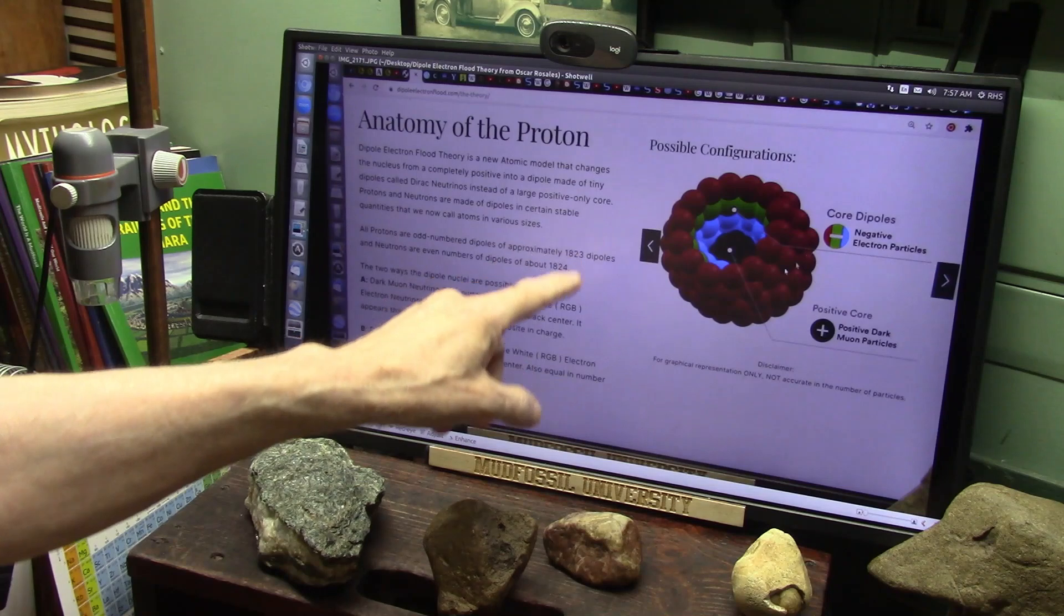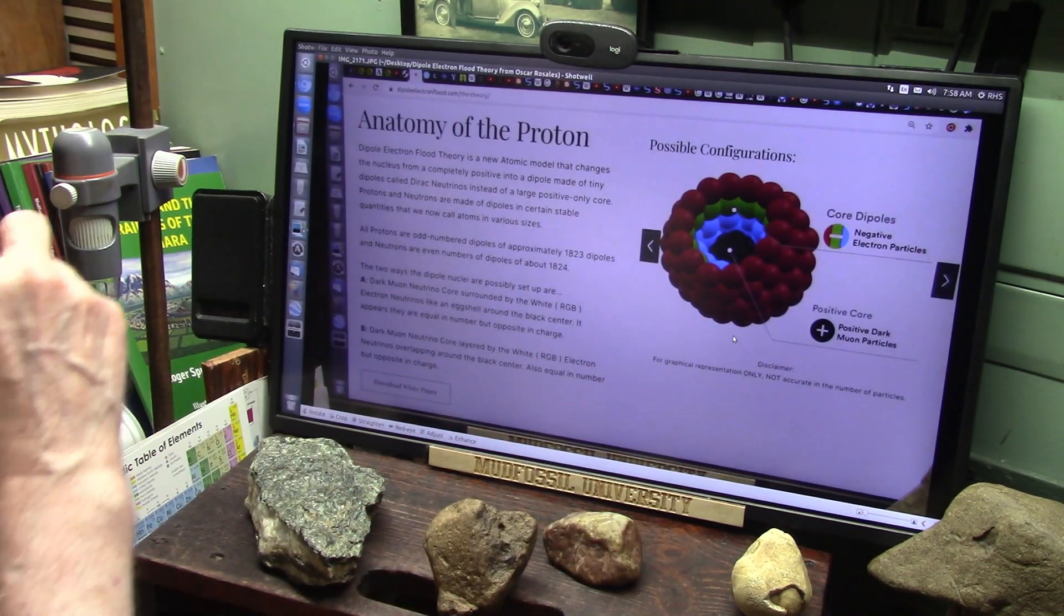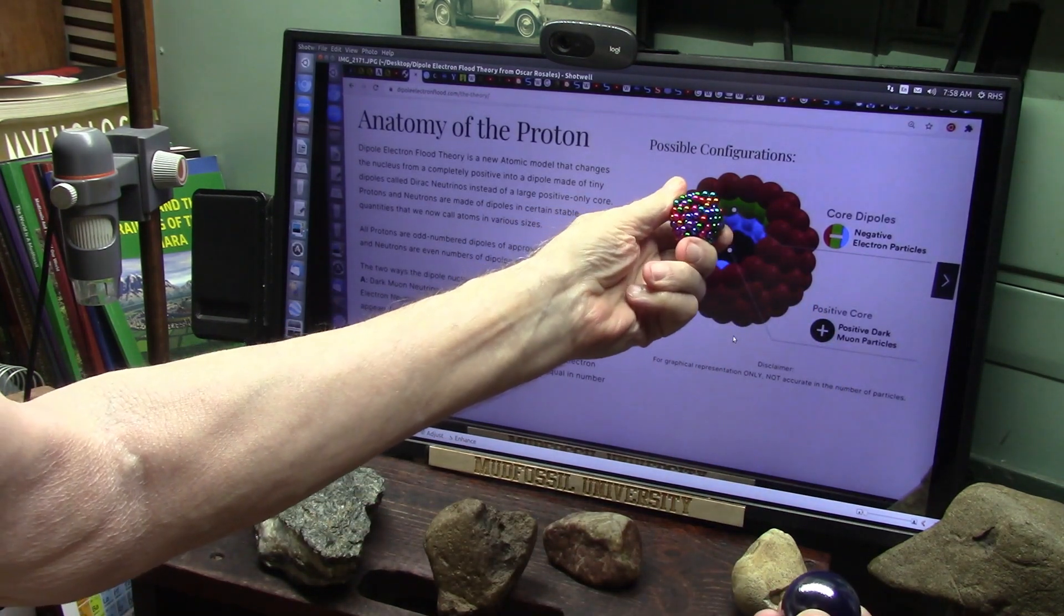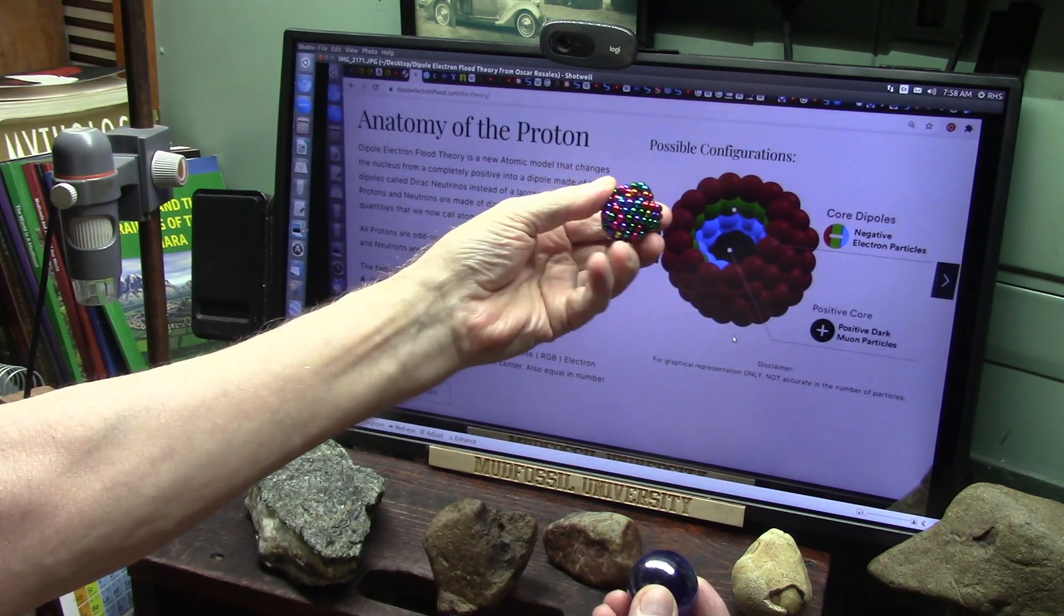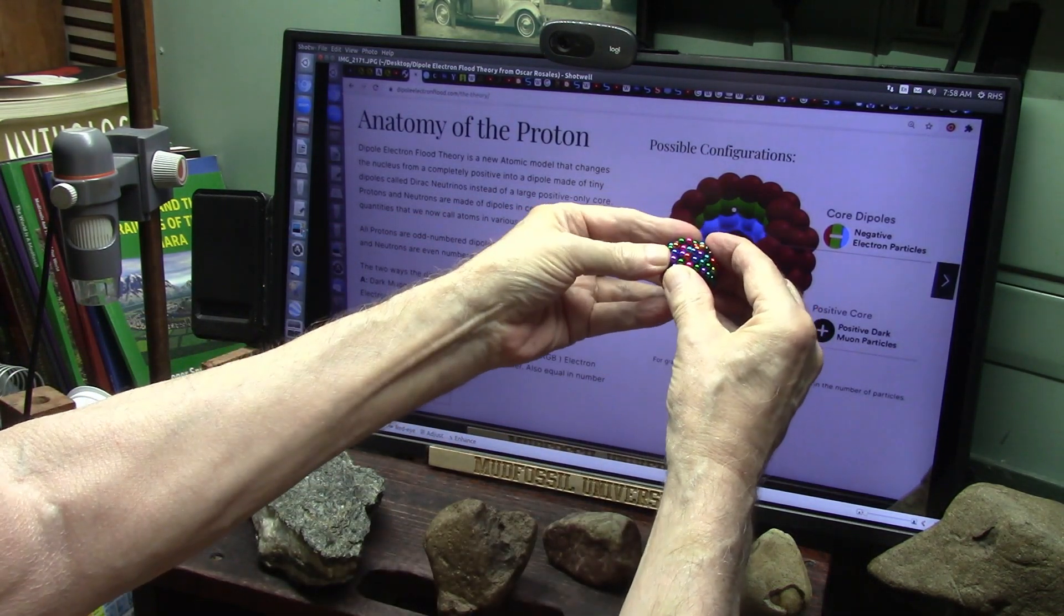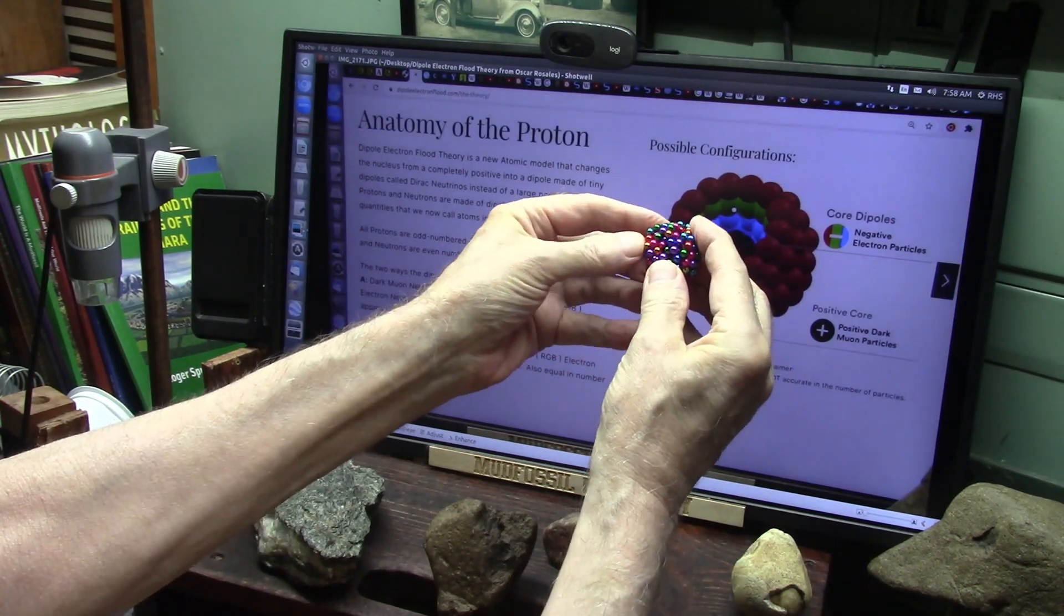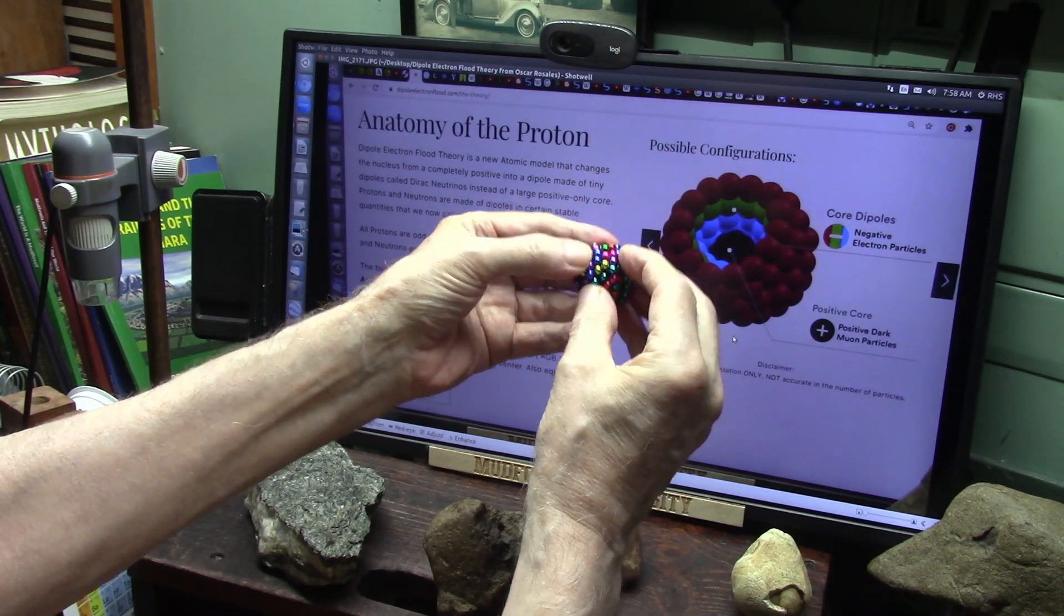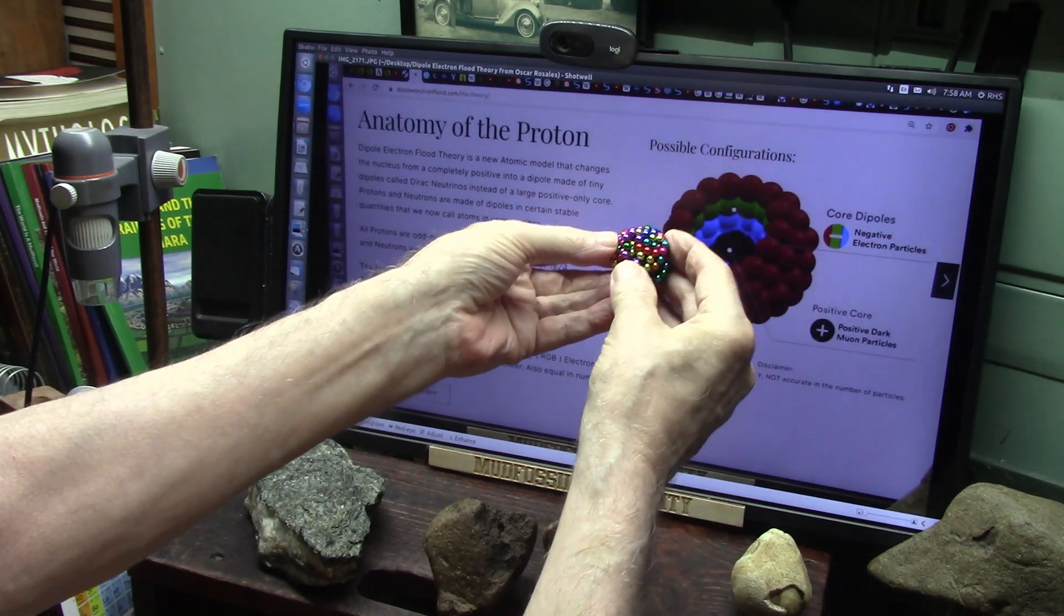This is what a proton is. A proton is not one big ball like this of positiveness. Absolutely not. It is 1823 or so dipoles. All right, each one of these is a little tiny magnet, and they stick together. And at 1823, for some reason, they become stable. 1824, you add one more and it becomes neutral. 1823 is stable but it's charged. Uneven numbers are charged. They want to add one more to make it stable, or they want to give one up, you know, associate to some other molecule to use up that extra electron.